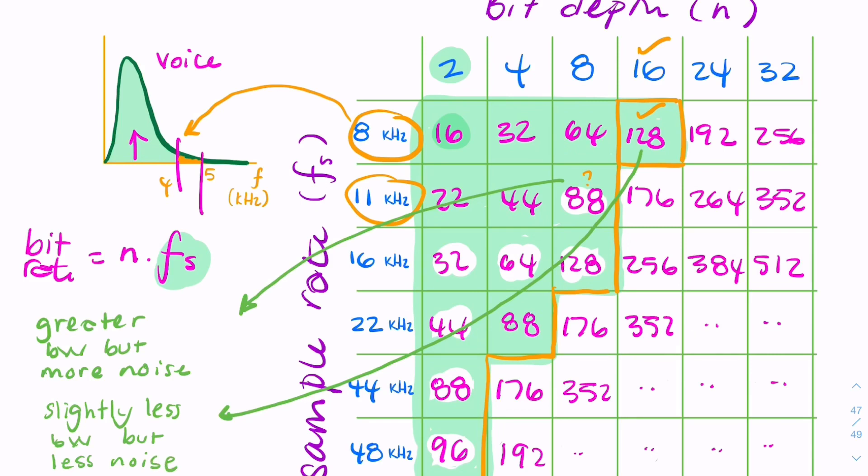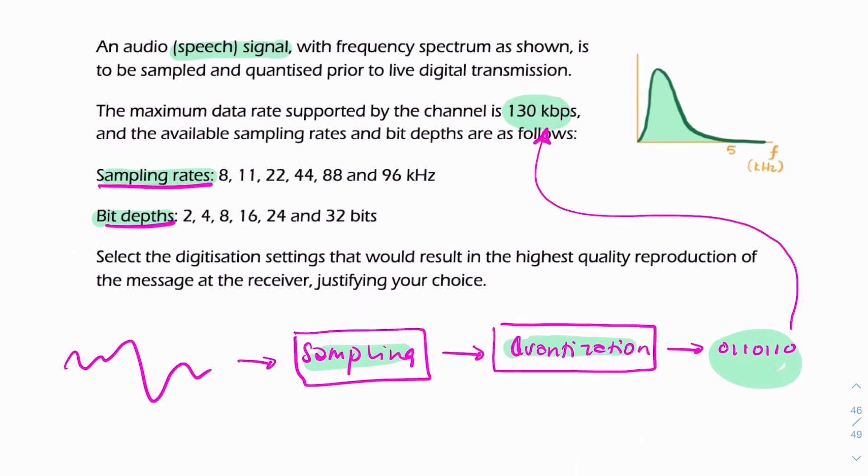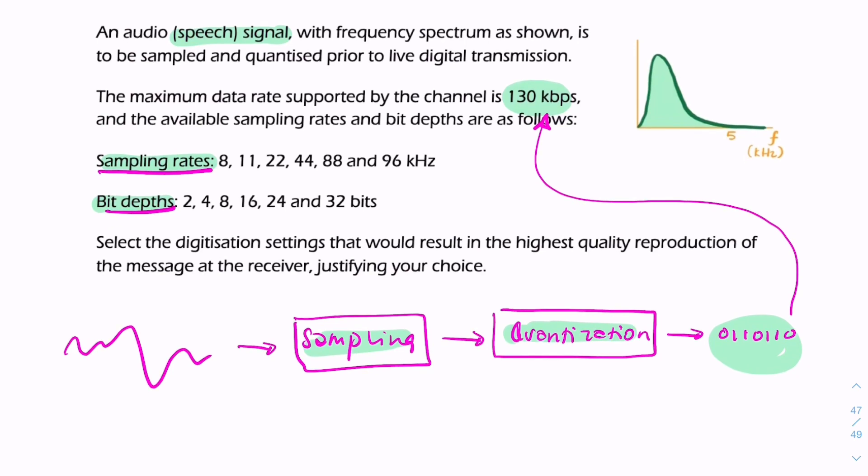So as an answer, the answer said choose the combination. If we go back to the question, the question is select the digitization settings. So I'd say the correct digitization settings would be 8 kilohertz and 16 bits per sample. That would be your final answer.